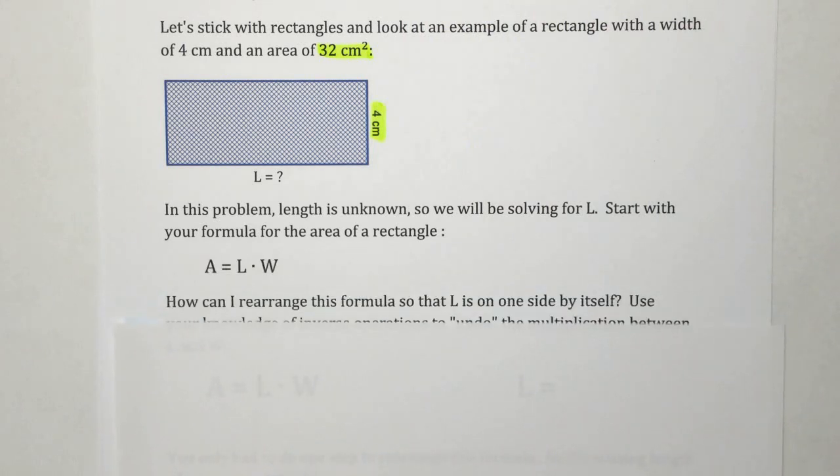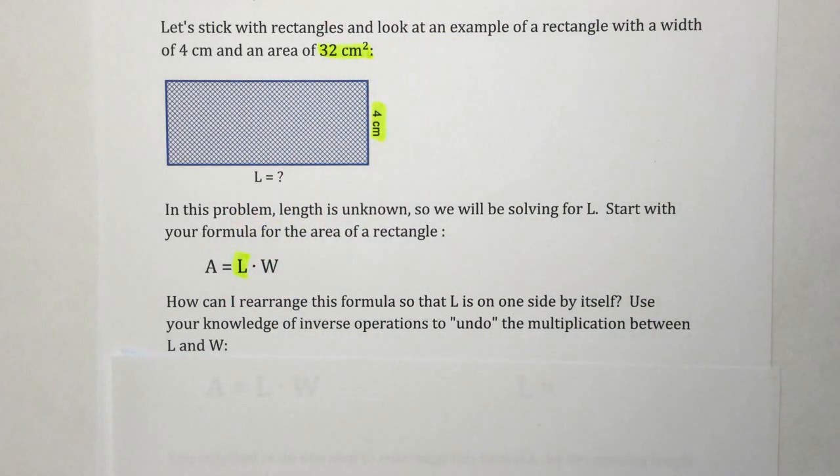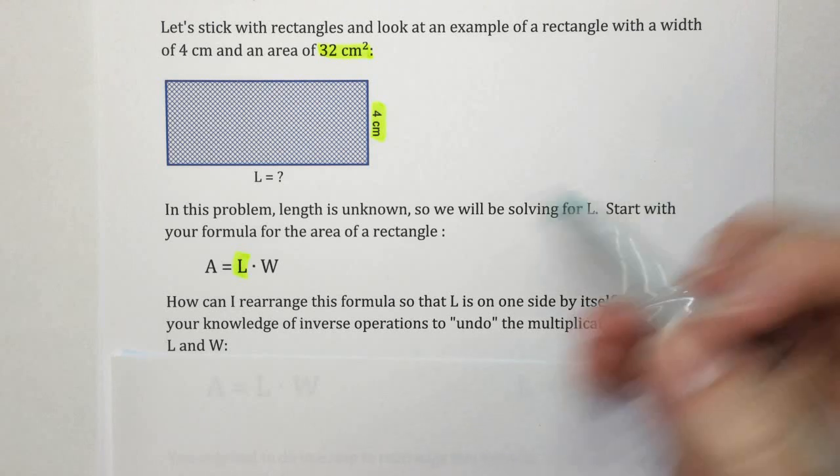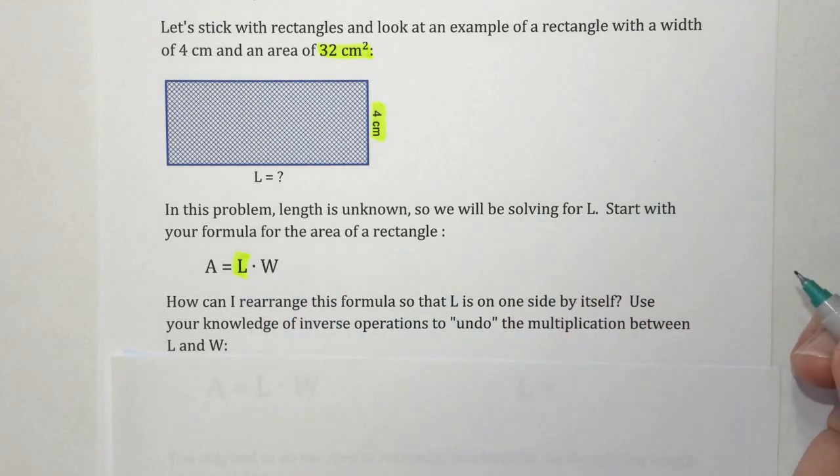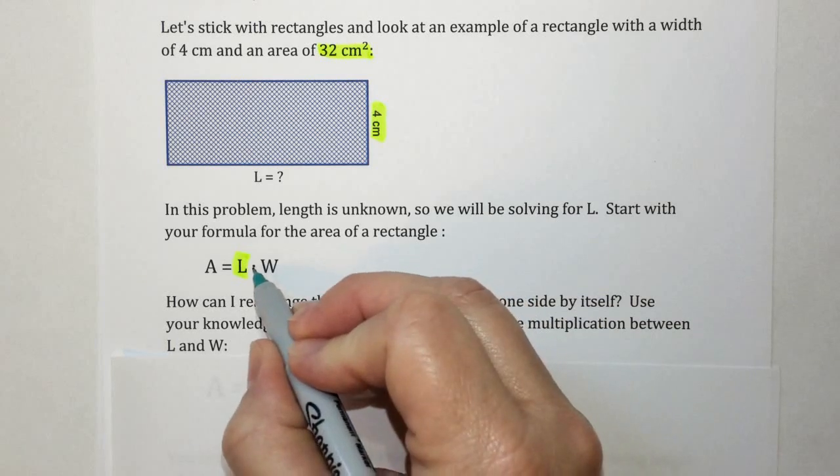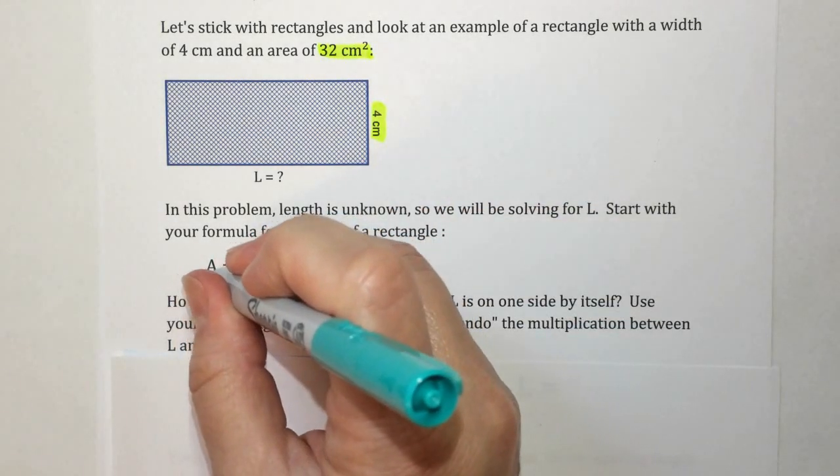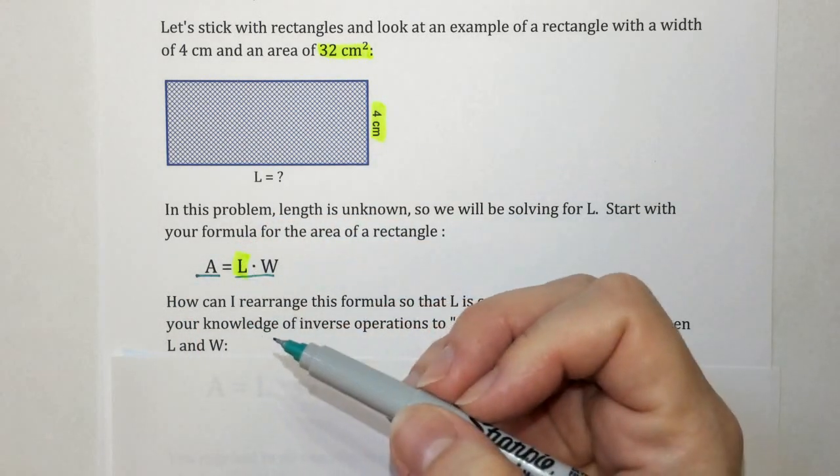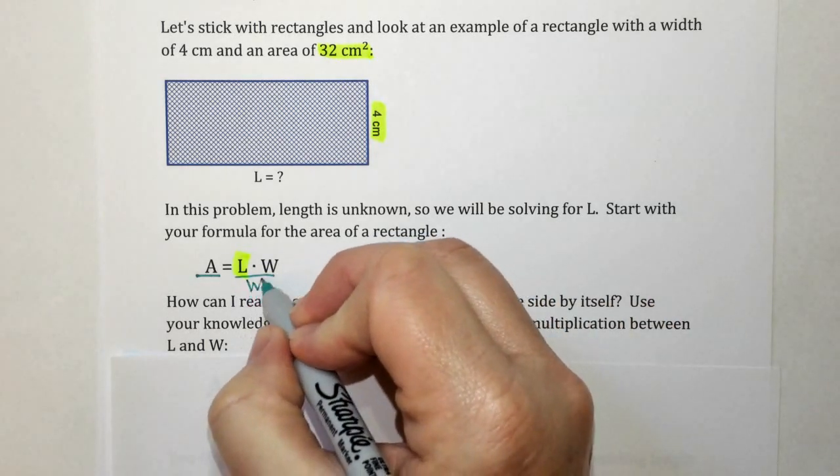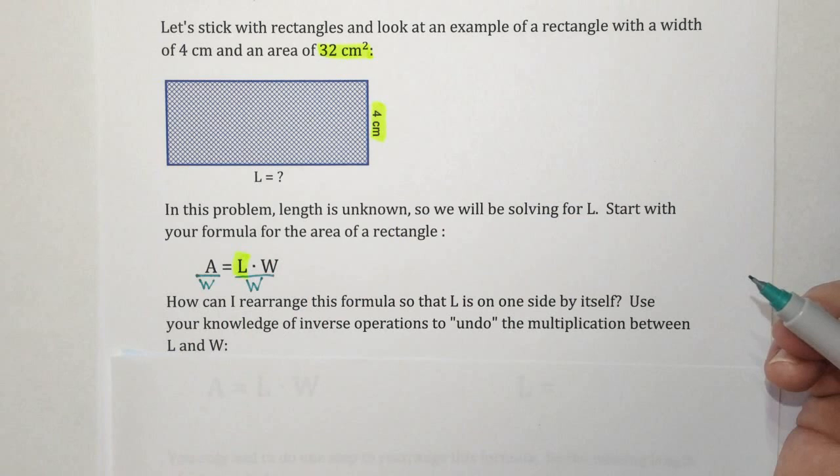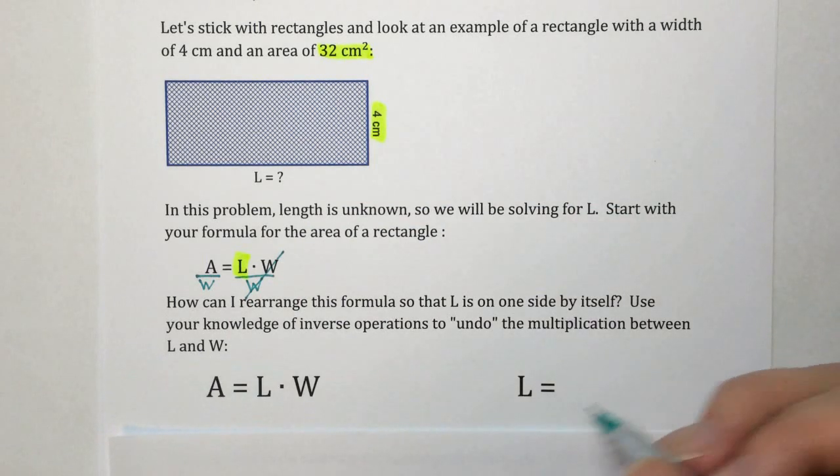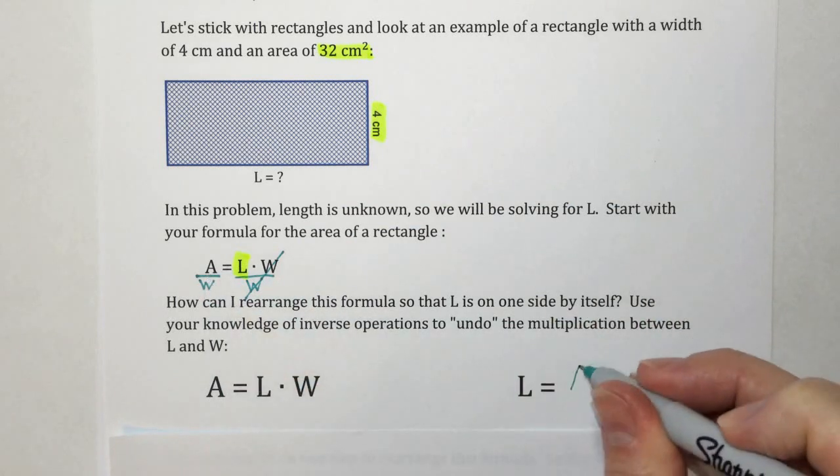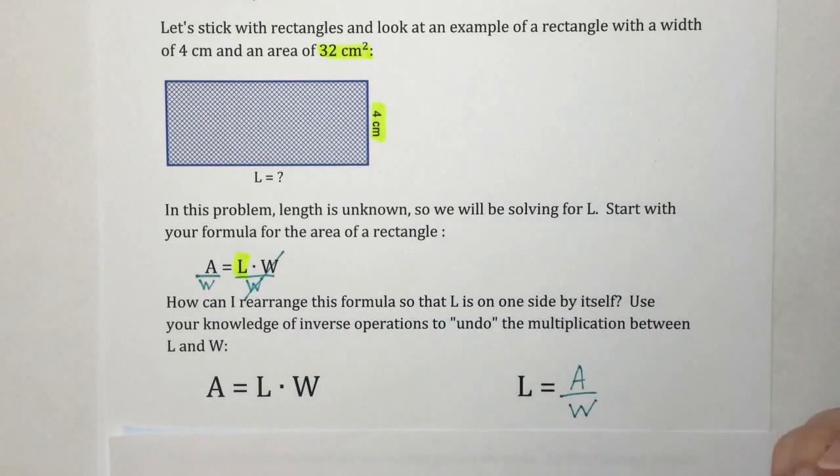We need to find L. Let's highlight that. That's our target or our subject. Look what is happening to the L right now. It is being multiplied by the W. So use your knowledge of inverse operations to undo the multiplication between L and W. If you see multiplication, you can undo it with division. Of course, you always do the same thing to both sides. I want to leave L over there by itself. So let's get rid of the W. Both sides get divided by W. Let me cross these out. W over W becomes 1, and then I can rewrite. The length, then, is A divided by W. That's your new formula after you've rearranged it.